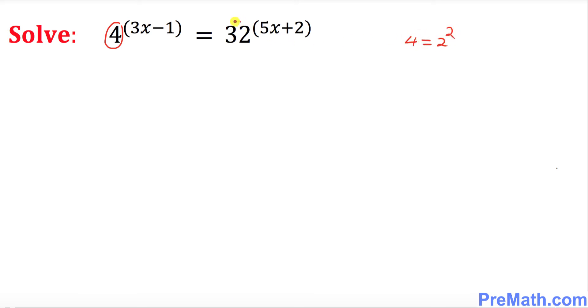Likewise, on the right hand side, base 32 can be written as 2 to the power of 5. If we multiply 2 five times, we get 32.